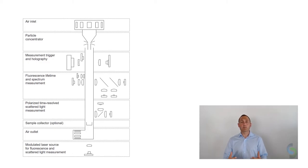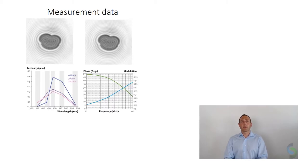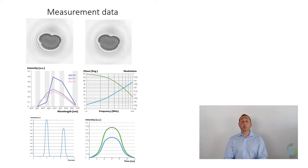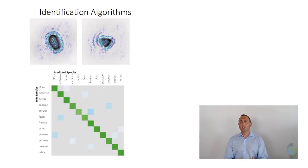Now what happens with that rich amount of measured properties of every single particle? The intelligent algorithms use the information from the holographic images, the fluorescence, light scattering and polarization measurements and identify the individual particles. Regions of interest found by the algorithm are highlighted to be able to validate and check for proper operation. The confusion matrix and time series comparison with manual Hirst type measurements show the outstanding performance of the system.